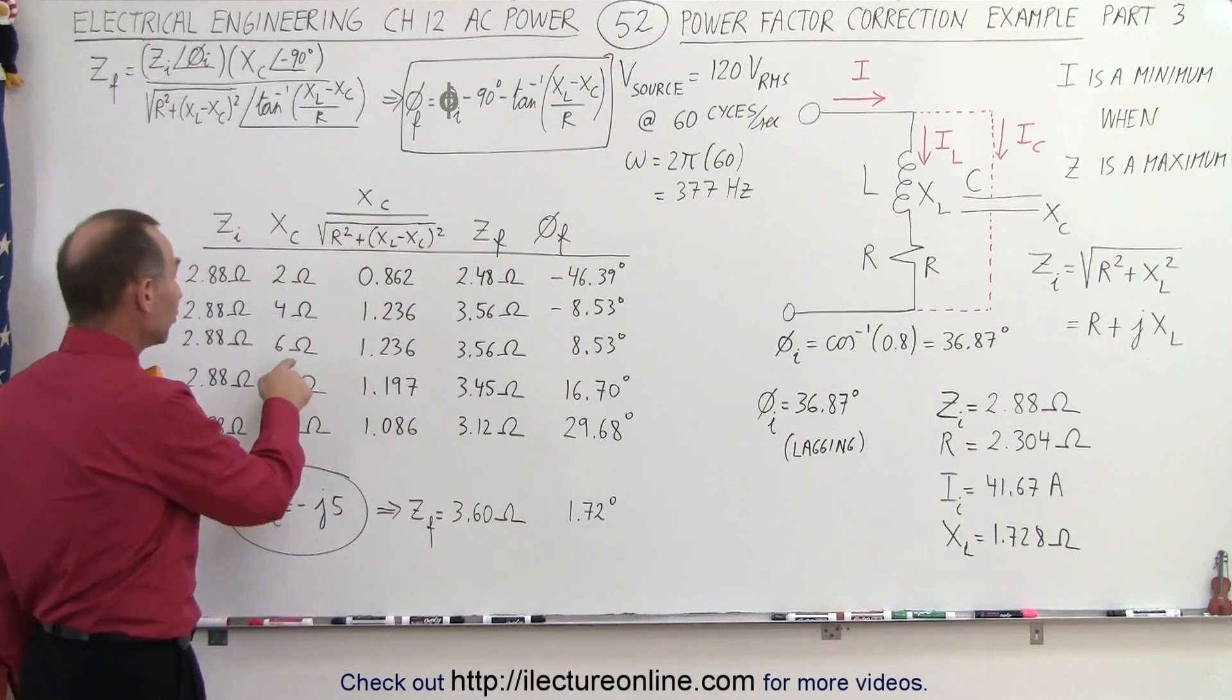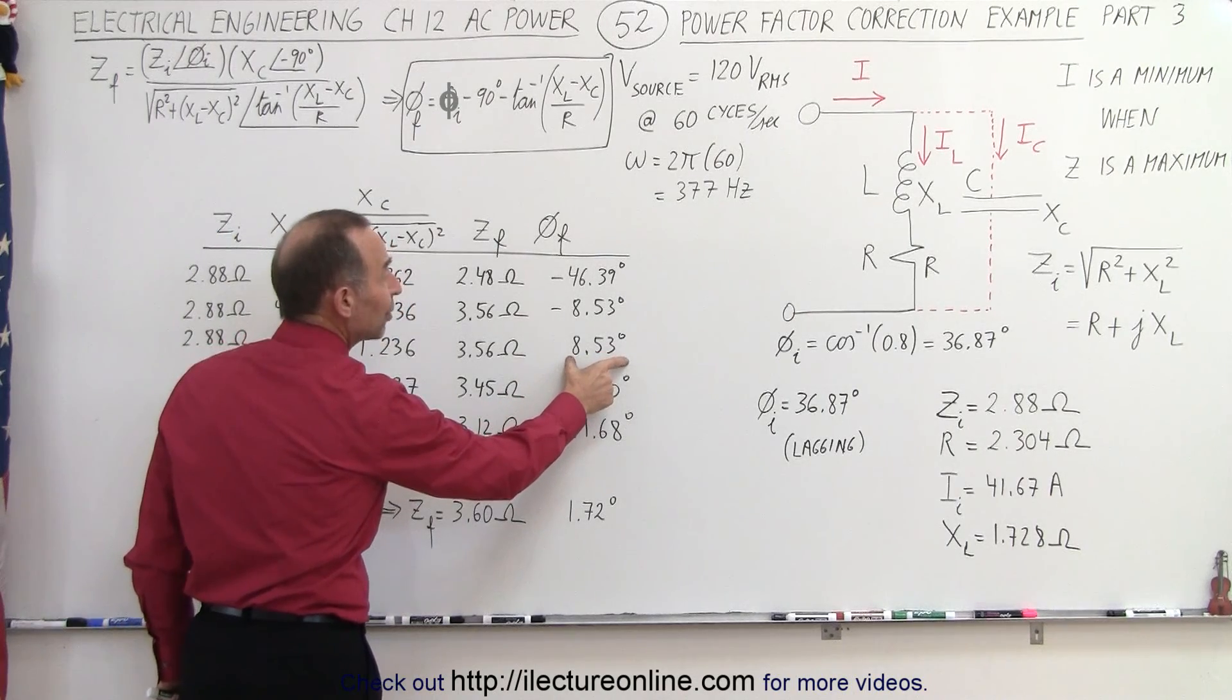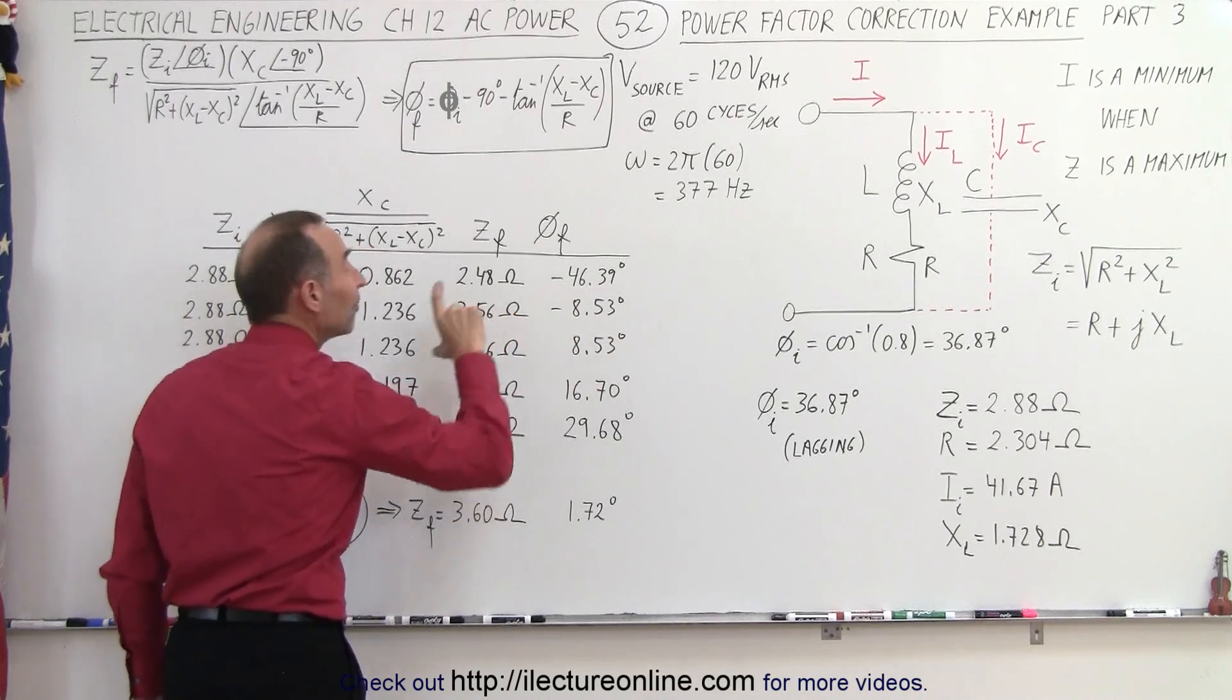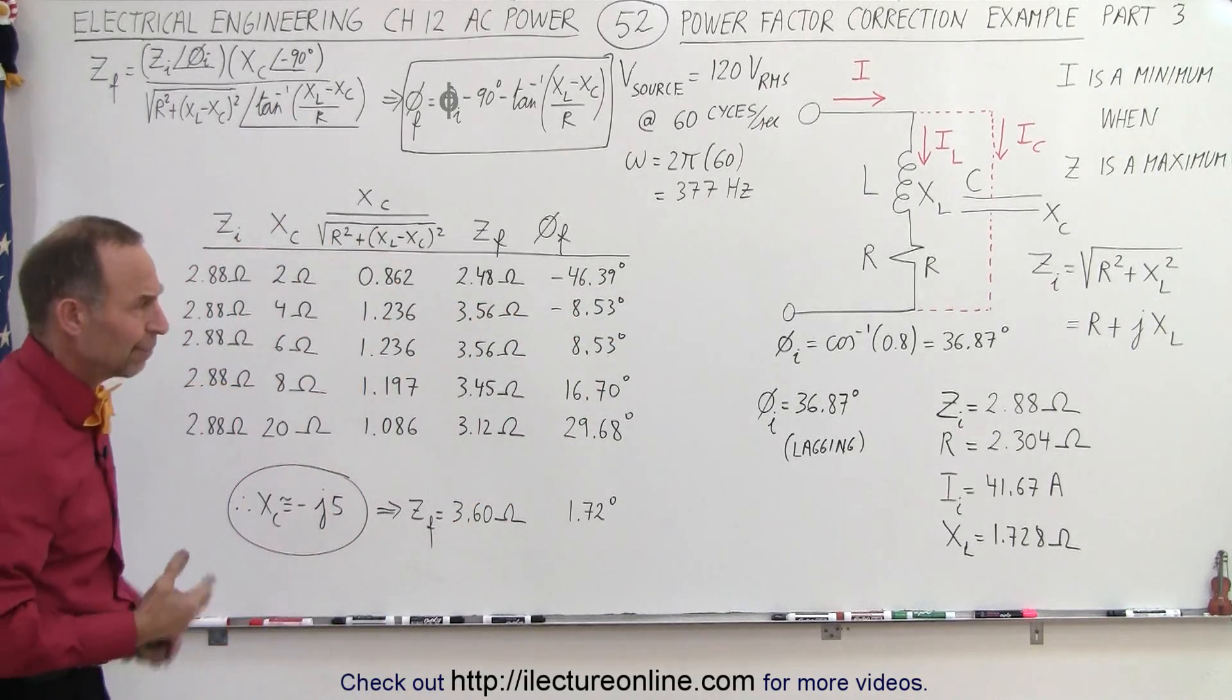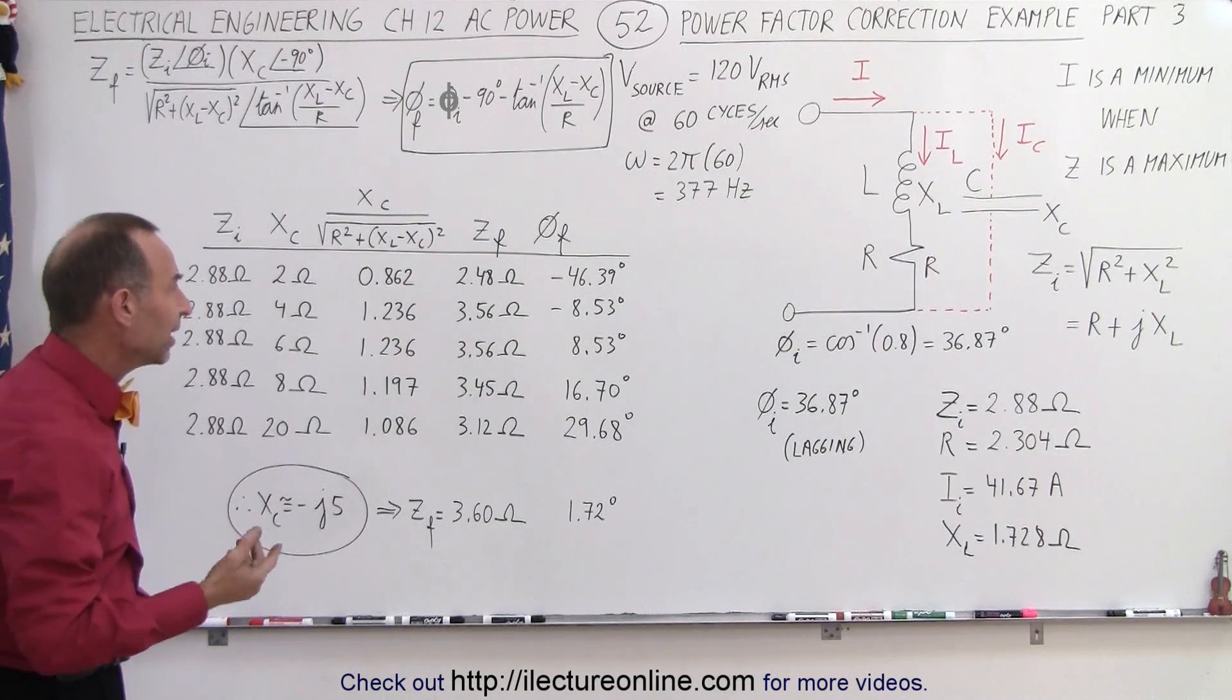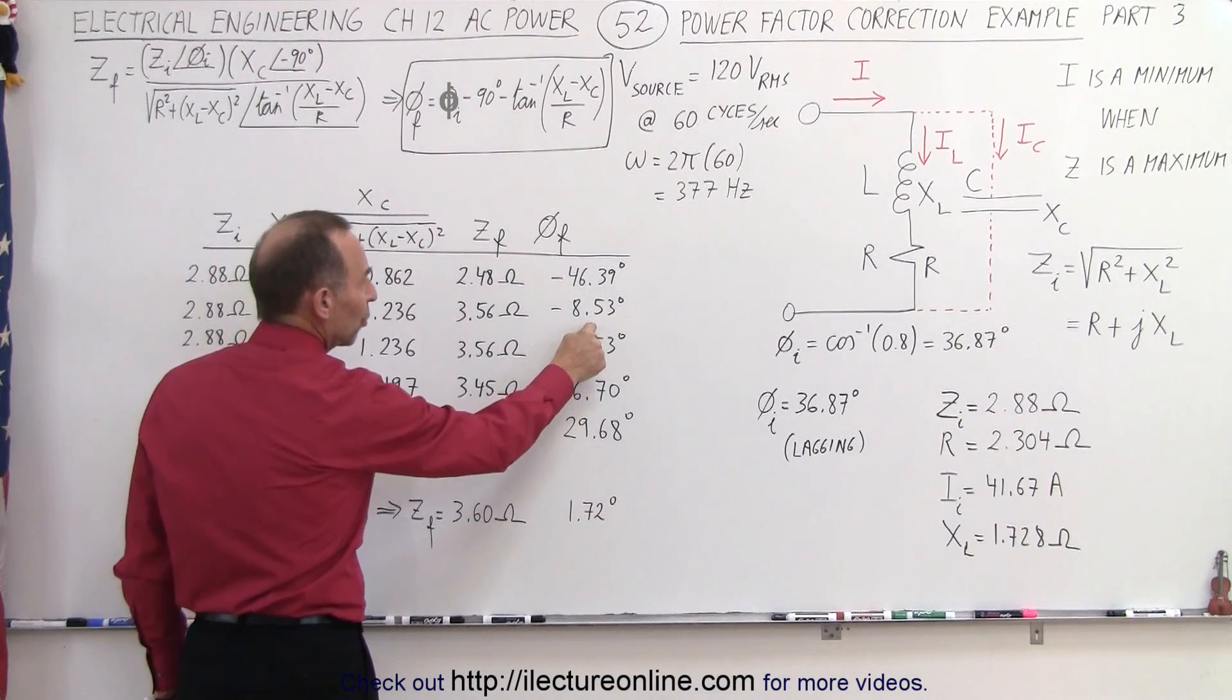Then if we increase it to six ohms, we had a positive 8.53 degree phase angle. Notice that both of these phase angles, positive or negative, the same amount, will give us the same impedance. The impedance doesn't care if it's a lagging or leading phase angle. And we can see then that the correct value, the max, the best value we can get is somewhere in between.